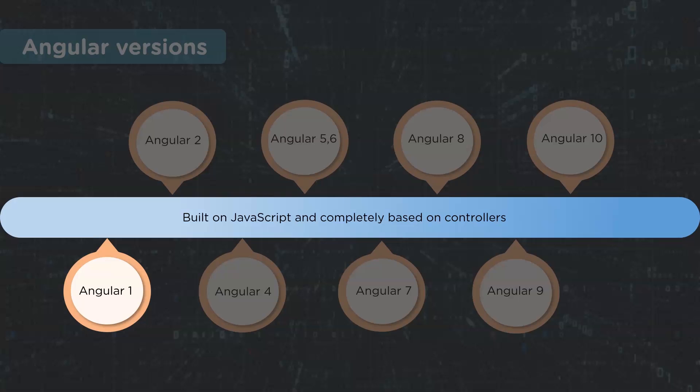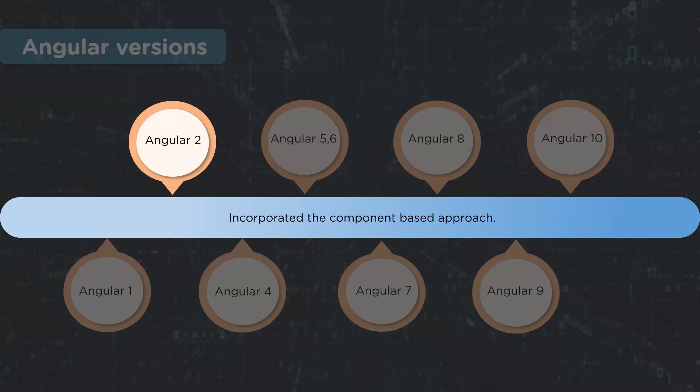AngularJS aimed at simplifying both the development and testing of applications by providing a framework for model-view-controller and model-view-view-model architectures. Next up, Angular 2 was released, which was written entirely in TypeScript.